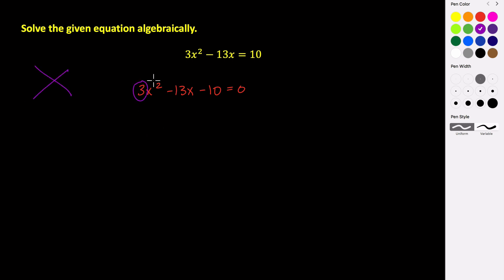So to factor this, we take the 3 and the negative 10 and take their product, get negative 30. So we're looking for two numbers that multiply by negative 30 and add to be negative 13. So factors of negative 30 would be negative 15 and positive 2 because negative 15 plus 2 is negative 13. Negative 15 times 2 is negative 30.